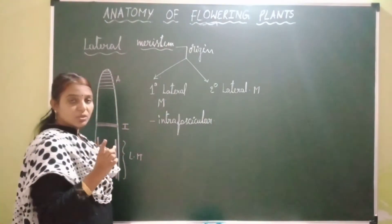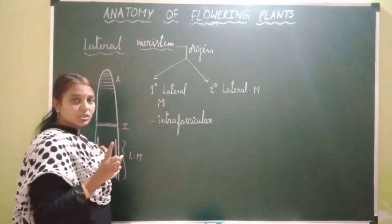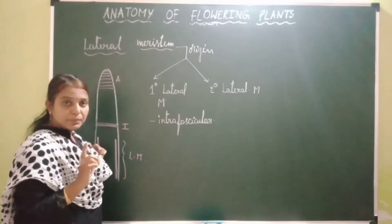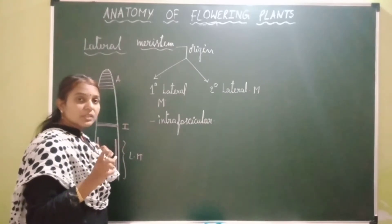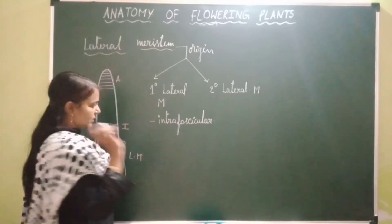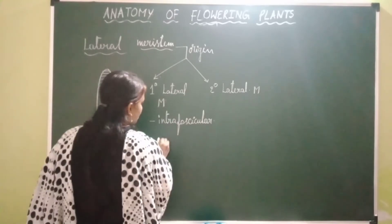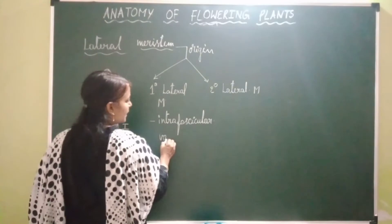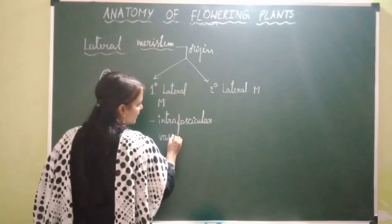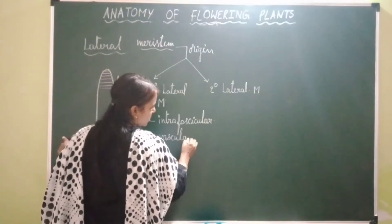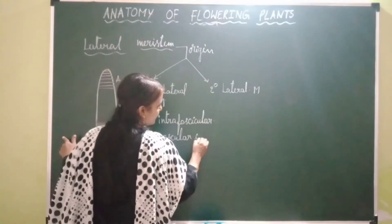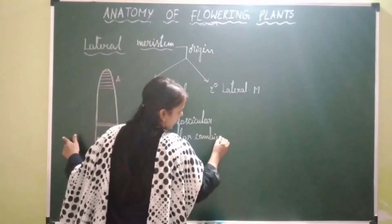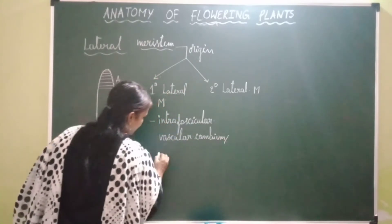Intrafascicular vascular cambium is present in dicot stem and the stem of gymnosperms. It is absent in roots of both dicots and gymnosperms, and even absent in the roots and stems of monocots. This is also called fascicular cambium.